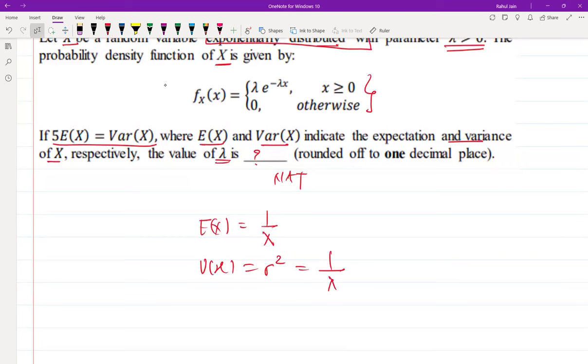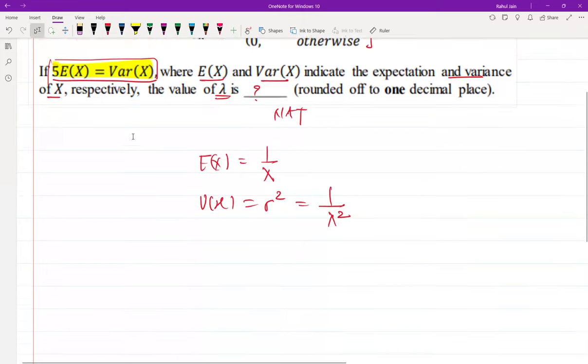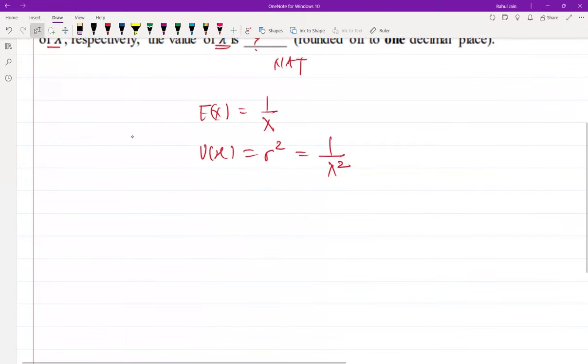Here it is given that 5 of E(X) is equal to variance of X. I can utilize the following equation and write 5 divided by lambda equal to 1 by lambda square using this equation.